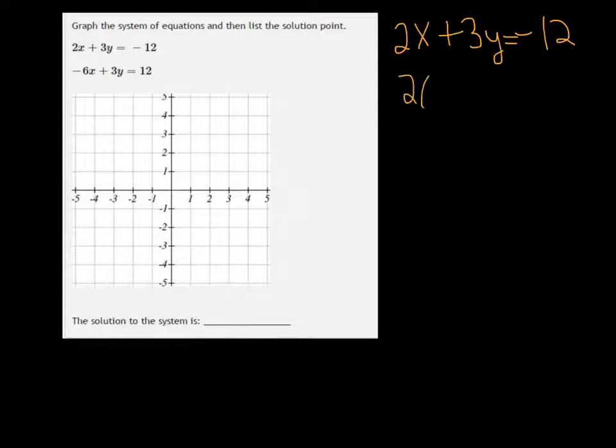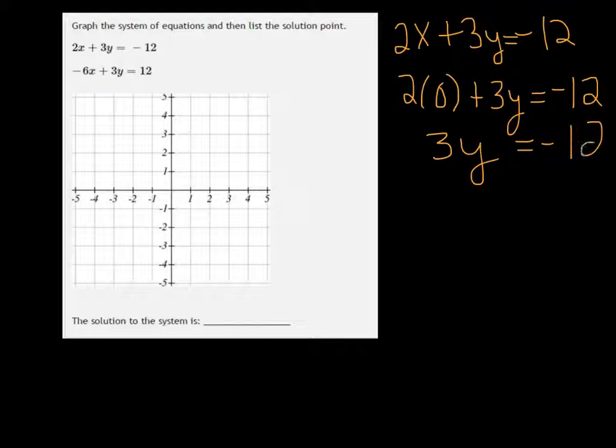Let's see what happens if I plug in 0 for x. So I have 2 times 0 plus 3y equals negative 12. That means that 3y equals negative 12, or y is negative 4. So I get the point 0, negative 4, and that will fit on my graph.